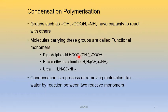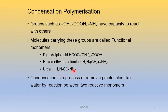Example: adipic acid contains two carboxylic acid groups — COOH, (CH2)4, COOH. Next, hexamethylene diamine contains two amine groups — NH2, (CH2)6, NH2. Next, urea also contains two amine groups — NH2, CO, NH2. All these molecules contain functional groups like OH, COOH, NH2, so they are called functional monomers.